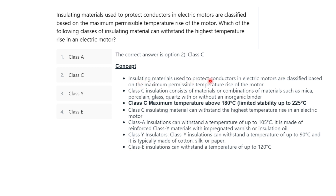Insulating materials used to protect conductors in electric motors are classified based on the maximum permissible temperature rise. Class C insulation consists of materials or combinations of materials such as mica, porcelain, and glass, with or without an inorganic binder. Class C maximum temperature is above 180°C. So for the highest temperature rise in electric motors, the answer is class C insulation.